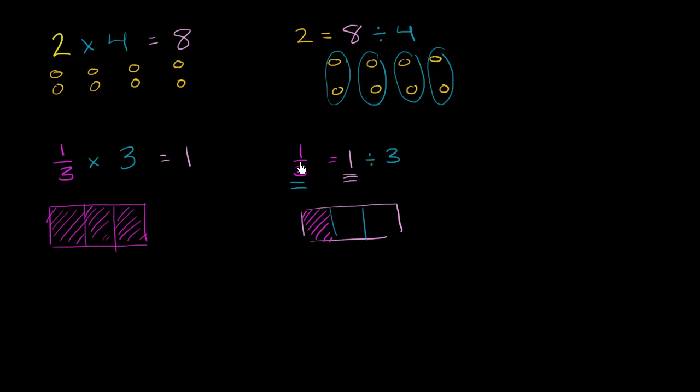Now this leads to an interesting question that might be popping in your brain. Notice we have 1 as the numerator, 3 as the denominator. And we just said that this is equal to the numerator divided by the denominator. 1 over 3 is the same thing as 1 divided by 3.